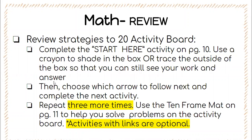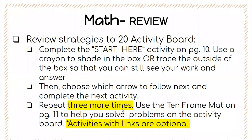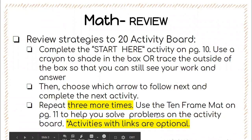For math today you are going to do the review strategies to 20 activity board. Here is how to fill out this activity board: you're going to complete the start here activity on page 10. Use a crayon to shade in the box or trace the outside of the box so that you can still see your work and your answer. Then choose which arrow to follow next and complete the next activity. Repeat this three more times — you're only completing four boxes altogether, so please do not get overwhelmed. You can use the 10 frame map on page 11 to help you solve the problems on the activity board.